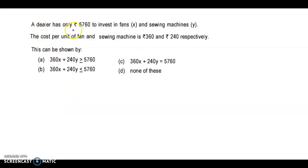A dealer has only Rs.5760 to invest in fans and sewing machines. The cost per unit of fan and sewing machine is Rs.360 and Rs.240 respectively.